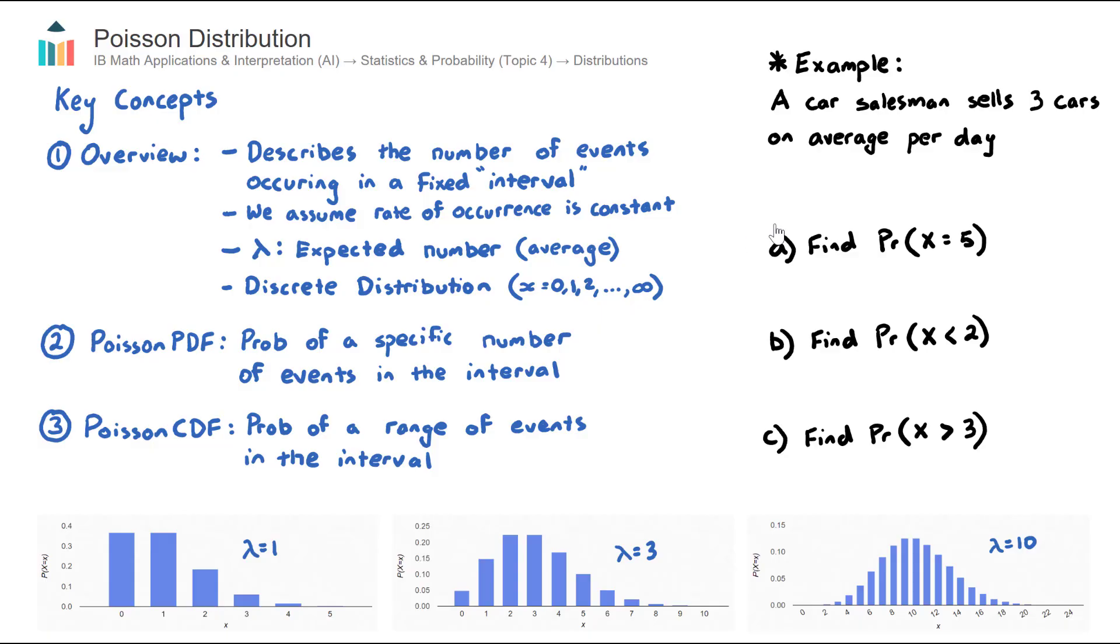And theoretically, but unrealistically in real life, infinity cars as well. The car salesman could sell 100 or 1,000, but they're in whole numbers from zero all the way up to, theoretically, infinity.